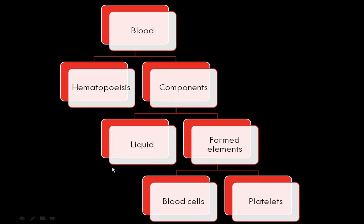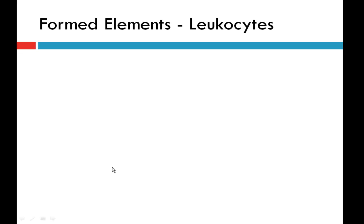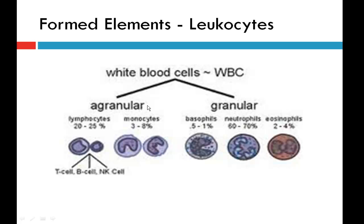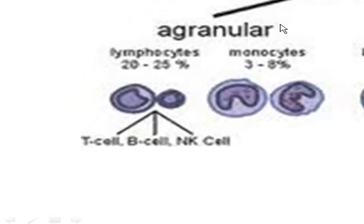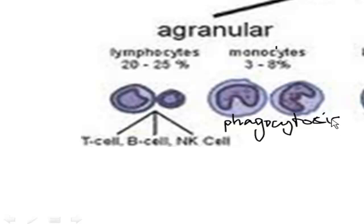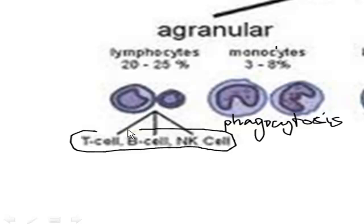Now we focus on the formed elements, starting with the smallest component: the leukocytes. There are two main categories — agranular and granular. Agranular leukocytes have two types: monocytes and lymphocytes. Monocytes are like little Pac-Man — they go around munching up foreign invaders by a process known as phagocytosis, enveloping and digesting them with lysosomes. The other agranular type are lymphocytes — T cells, B cells, and natural killer cells — which produce antibodies to fight off primarily viral infections.